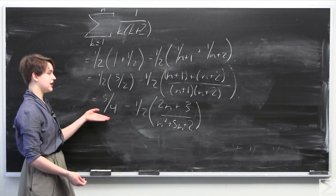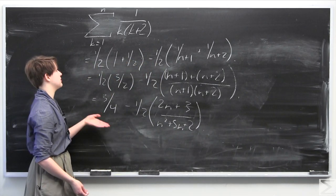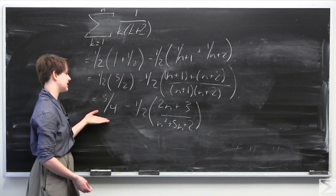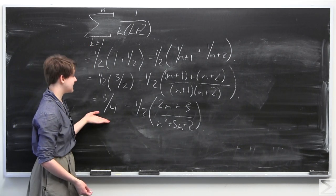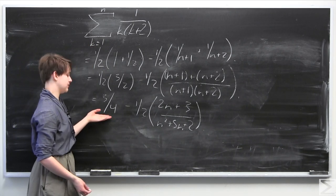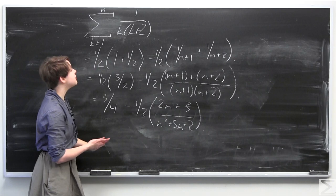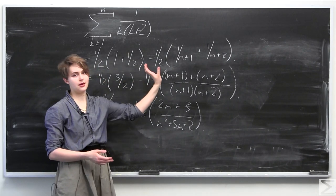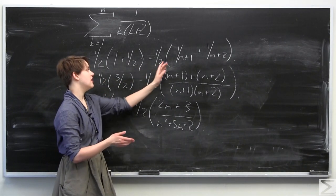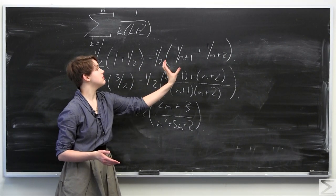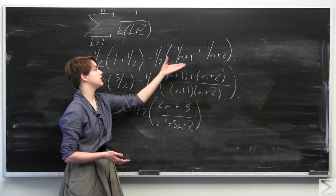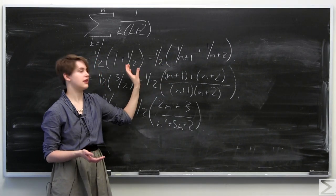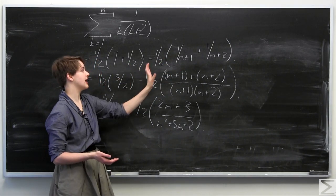So our final answer in terms of n is 3 fourths minus 2n plus 3 over 2 times n squared plus 3n plus 2. We simplified this summation using a partial fraction decomposition that produced a nice telescoping sum, allowing most terms to cancel.